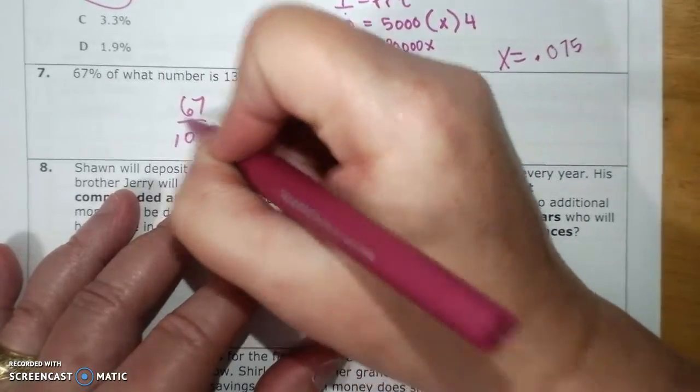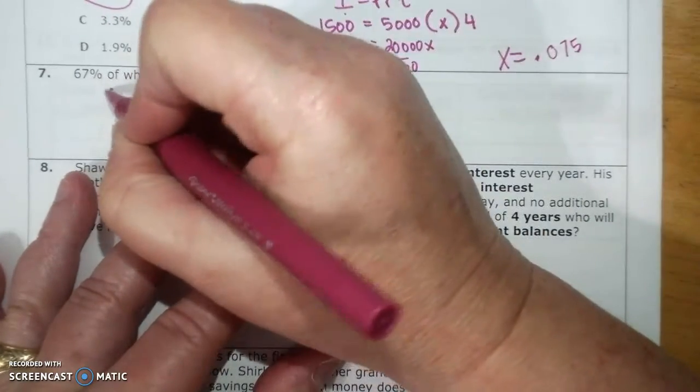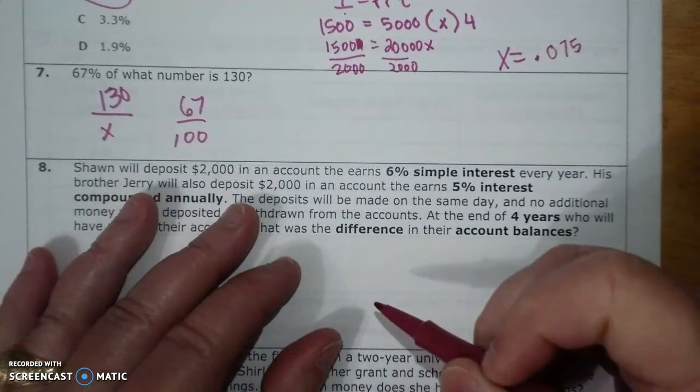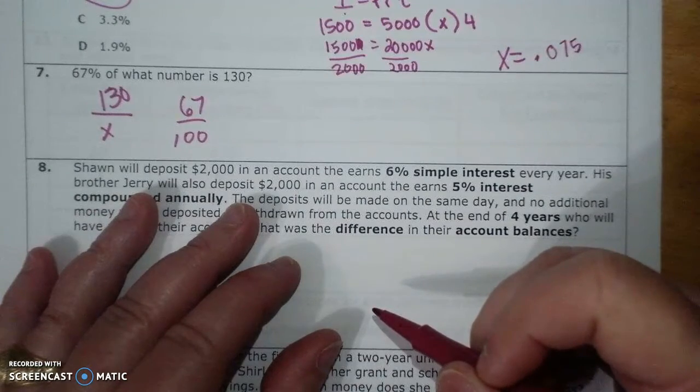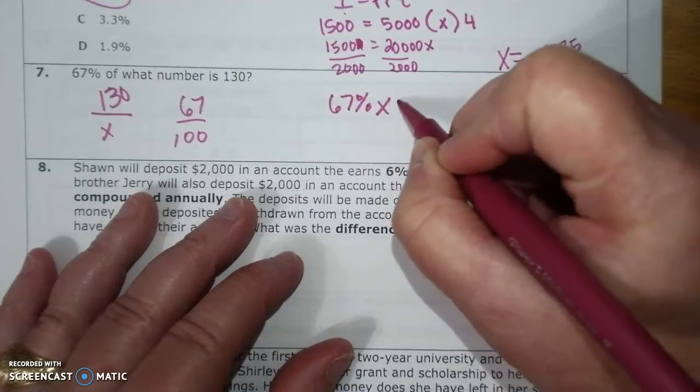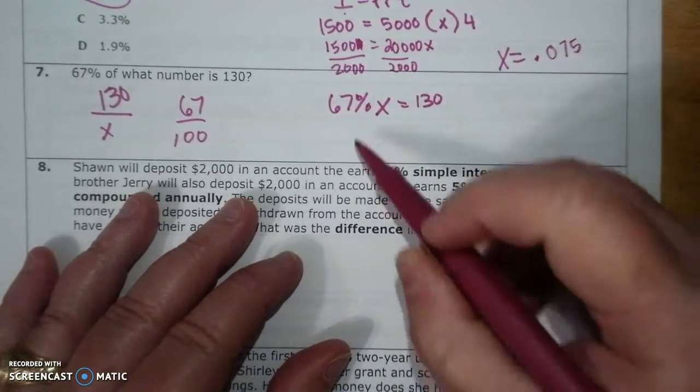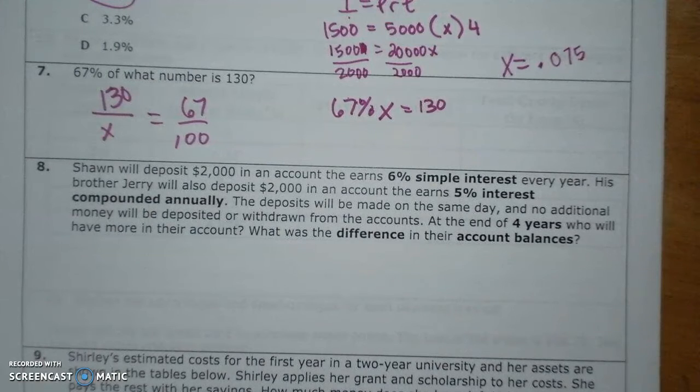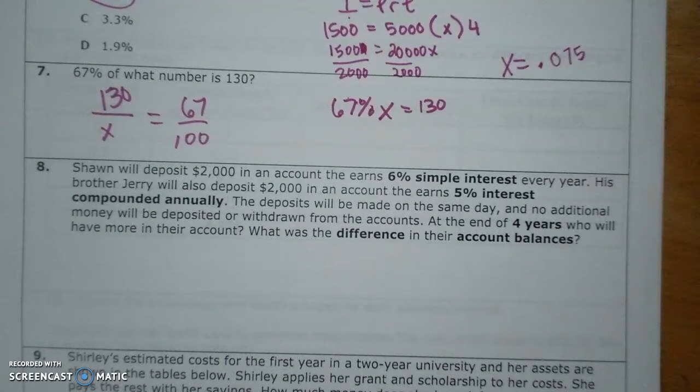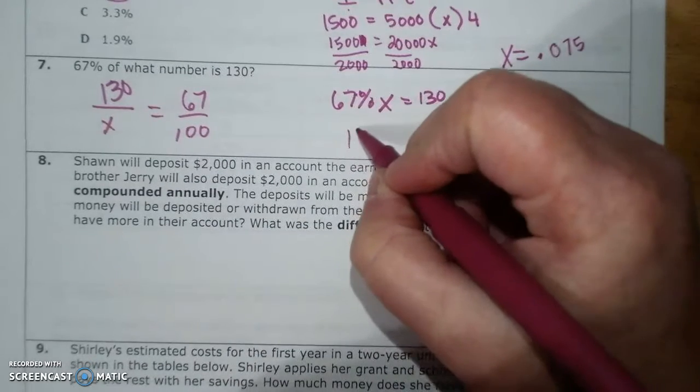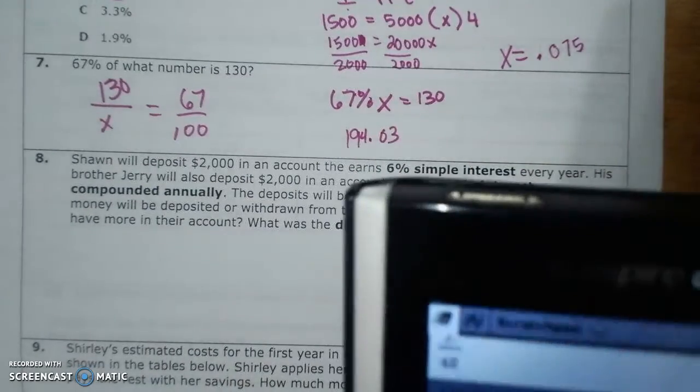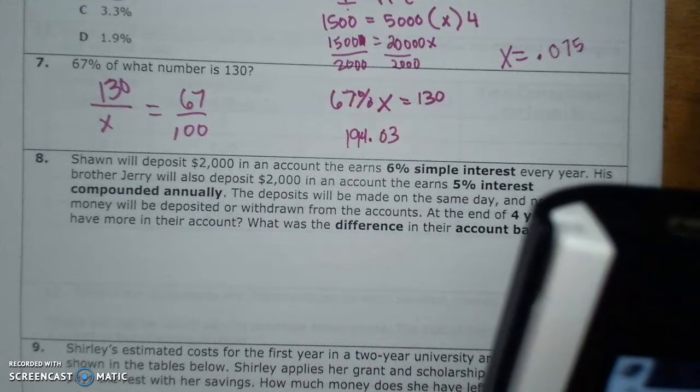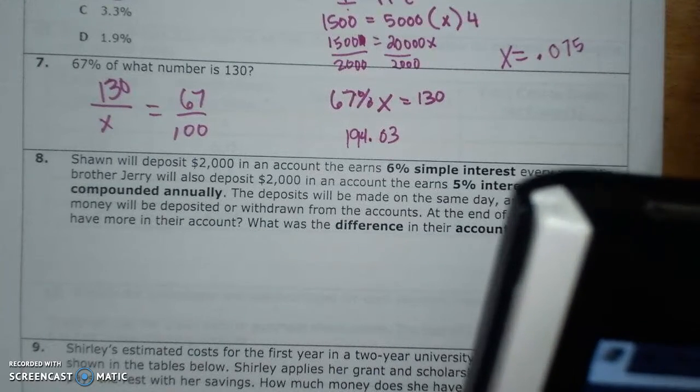67% of what number is 130? 67% over 100 equals 130 over X. And I'm going to solve for X by cross-multiplying. 194.03, and I can check that by reversing it: 194 times 0.67 gives me the 130.